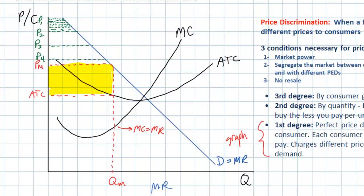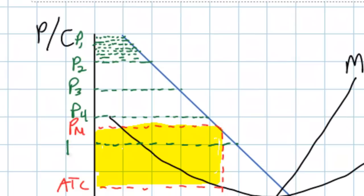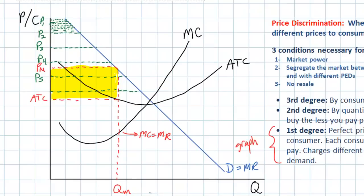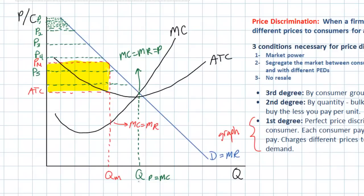In the case of a perfect price discriminator, the monopolist charges a different price to each additional consumer corresponding with his or her willingness and ability to pay. The monopolist will stop producing where MC equals MR, and since marginal revenue now equals the price charged for the last unit, the result of perfect price discrimination is that the monopolist produces at the quantity where P equals MC. This is the socially optimal quantity — in other words, a perfectly price-discriminating monopolist will be allocatively efficient.